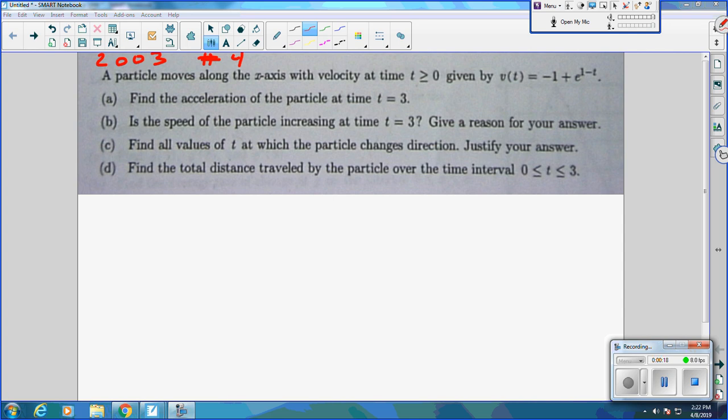Find the acceleration at time t equals 3. So listen, the first thing you've got to recognize with part A - it says find the acceleration. You have to recognize, at this point in our game, the derivative of position is velocity, and the derivative of velocity is acceleration.